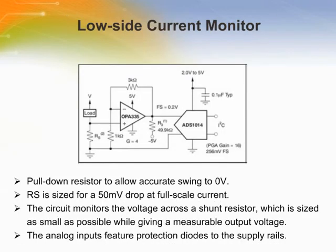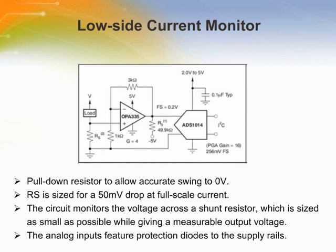This slide shows a circuit for a low-side shunt type current monitor. The circuit monitors the voltage across a shunt resistor, which is sized as small as possible while giving a measurable output voltage. This voltage is amplified by an OPA335 low-drift op-amp and the result is read by the ADS1014 or 1015. It is suggested that the ADS1014 or 1015 be operated at a gain of 16, with the OPA335 gain set lower. For a gain of 16, the op-amp should be set up to give a maximum output voltage no greater than 0.256 volts. If the shunt resistor is sized to provide a maximum voltage drop of 50 millivolts at full-scale current, the full-scale input to the ADS1014 or 1015 is 0.2 volts.